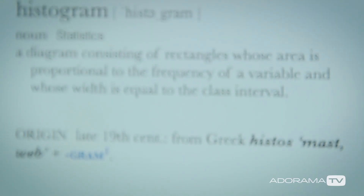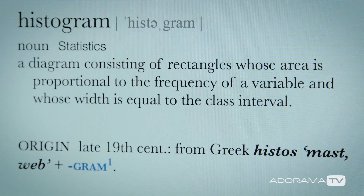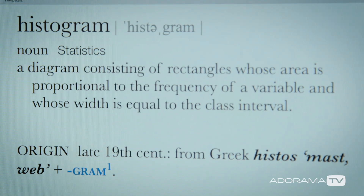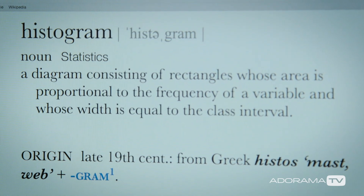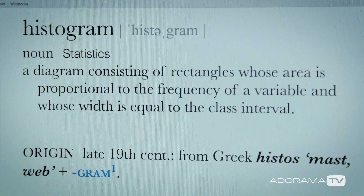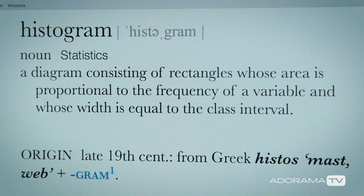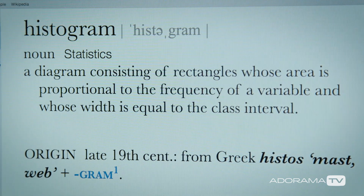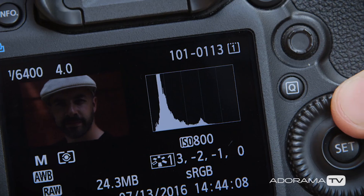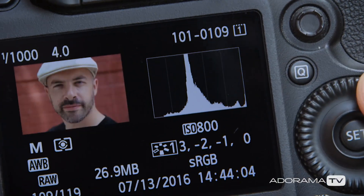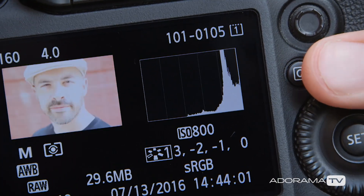The dictionary definition of a histogram is a diagram consisting of rectangles whose area is proportional to the frequency of a variable and whose width is equal to the class interval. It's actually a simple graph of the brightness of the pixels in your image from pure black on the left to pure white all the way on the right.